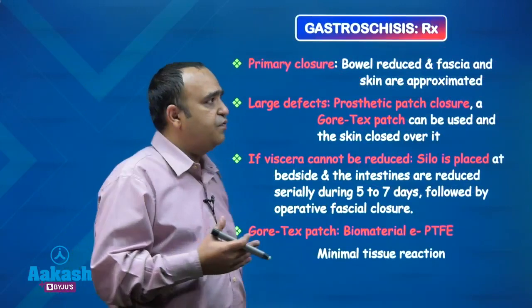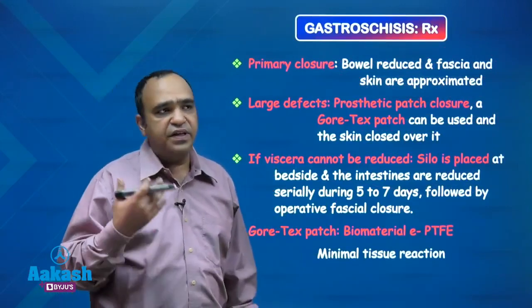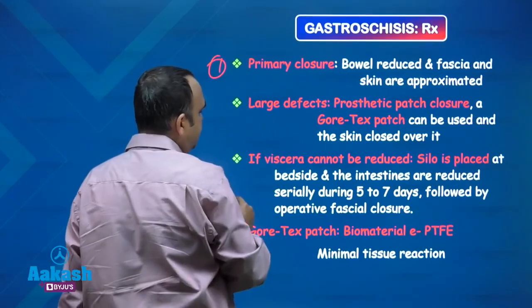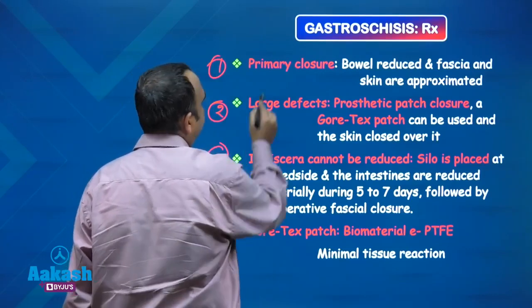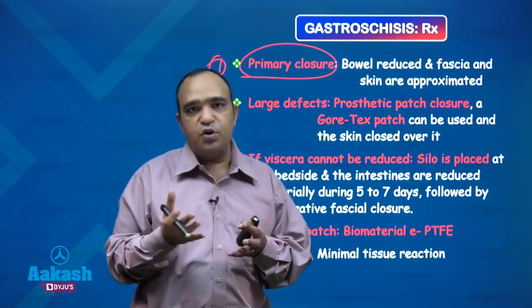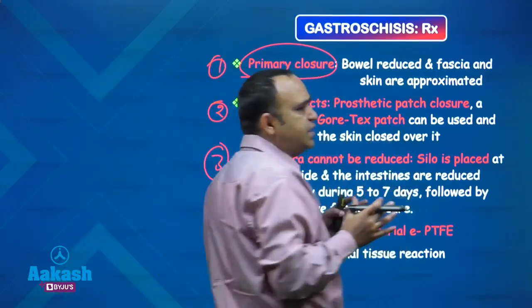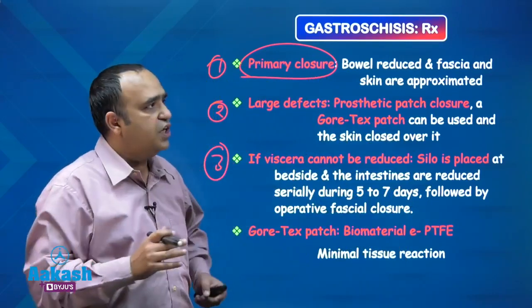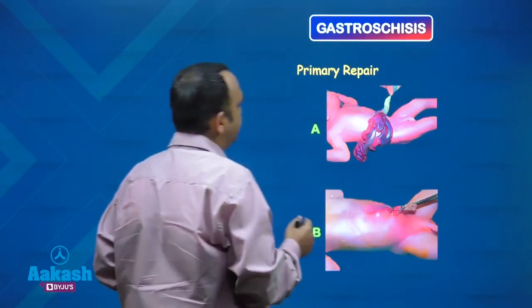The management of gastroschisis depends on the size of the defect and the condition of the bowel. There are three procedures. First is easy primary closure — possible when the defect is small. Reduce the bowel inside and close the fascia and skin of the anterior abdominal wall. That is a very simple primary closure.